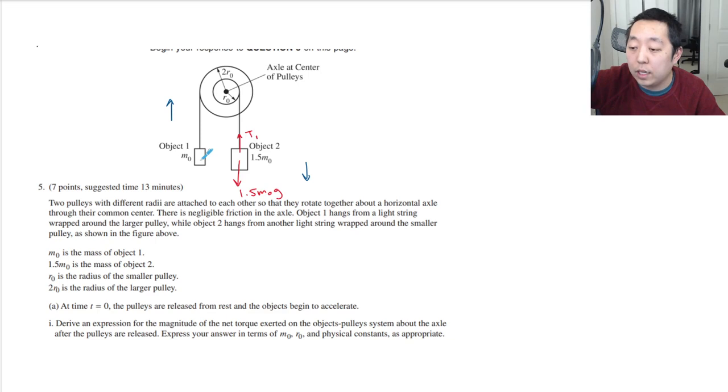And then here we're going to say, oh, they want the net torque, yeah, they wanted the expression for the net torque. So, then we're going to look at this guy. This is M0 G, and this guy, we'll say, is T2. Now, we want the net torque on object's pulley system.